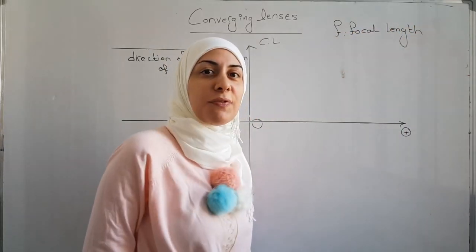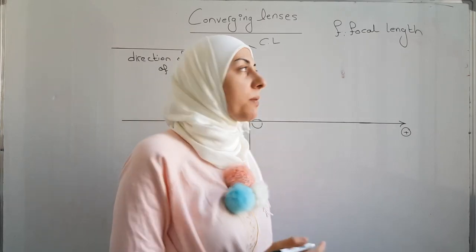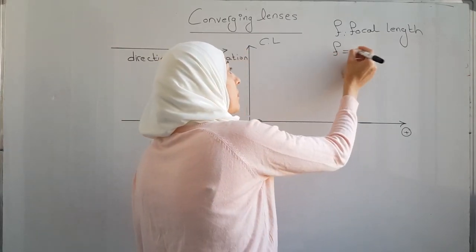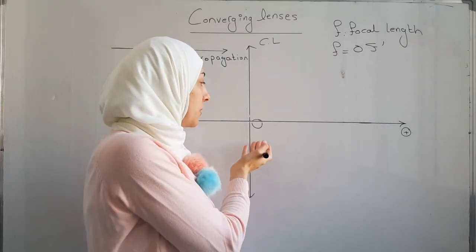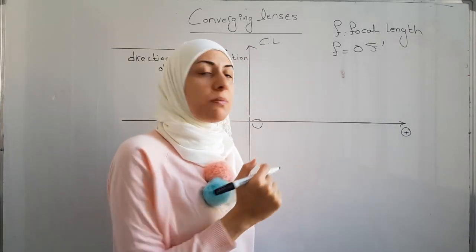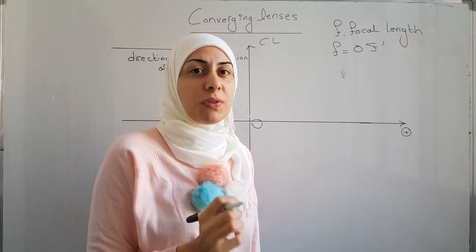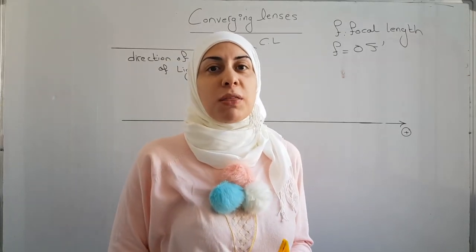It is defined as the distance between O and f prime, where O as we said is the optical center and f prime is another important point on the optical axis.